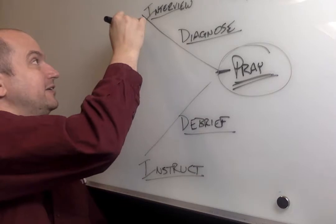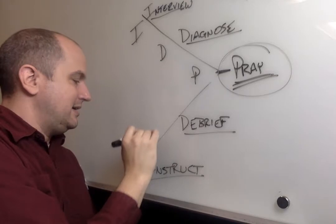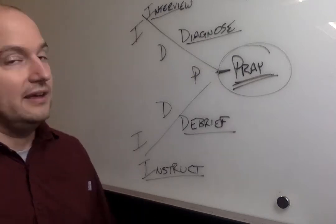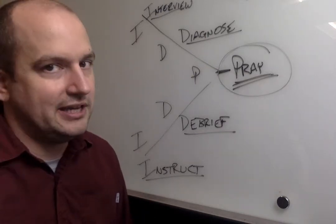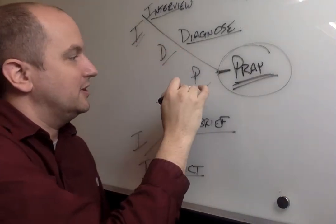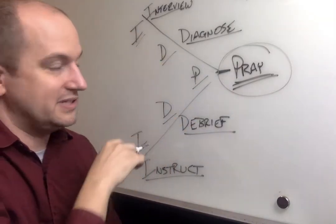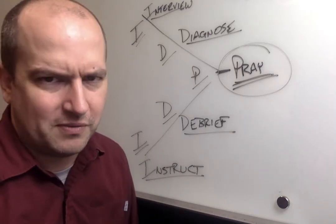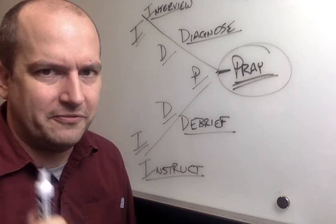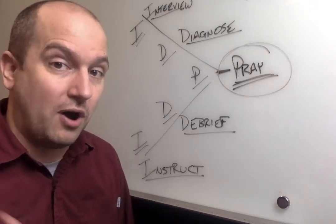So this is the IDP arrow. I D P. I do pray. I do pray. And as long as we can keep that in mind, it actually becomes pretty straightforward. I'm going to interview people, diagnose, pray, debrief, and instruct. That simple structure becomes an easy mnemonic memory device for us to remember the five-step prayer model.